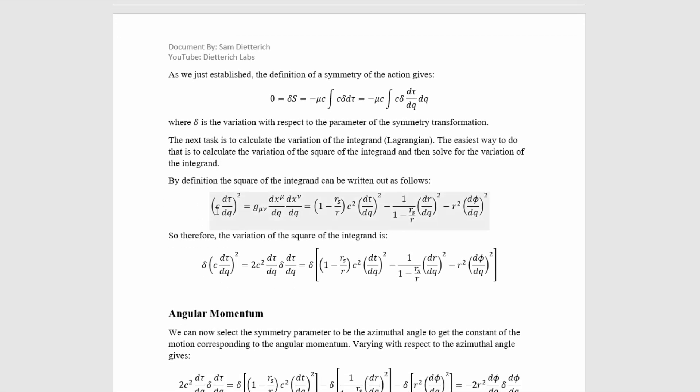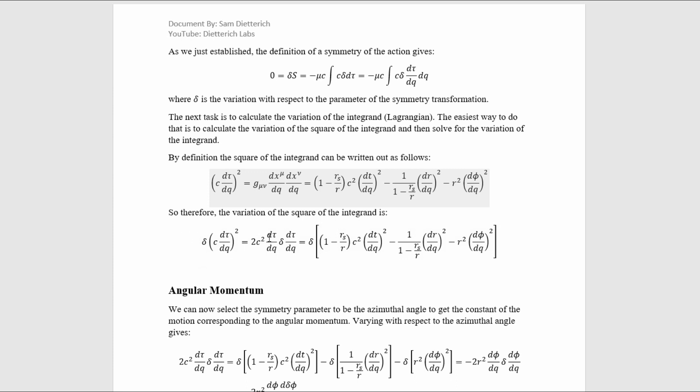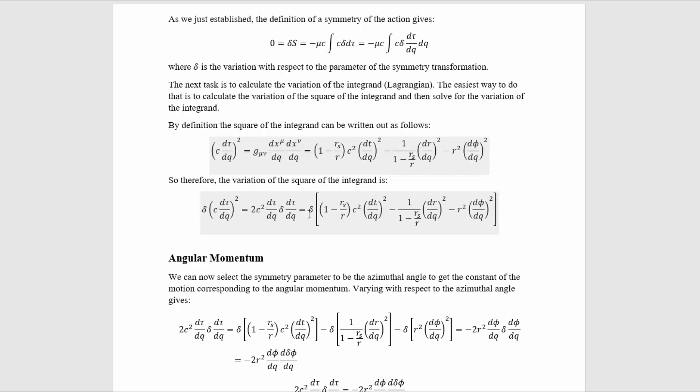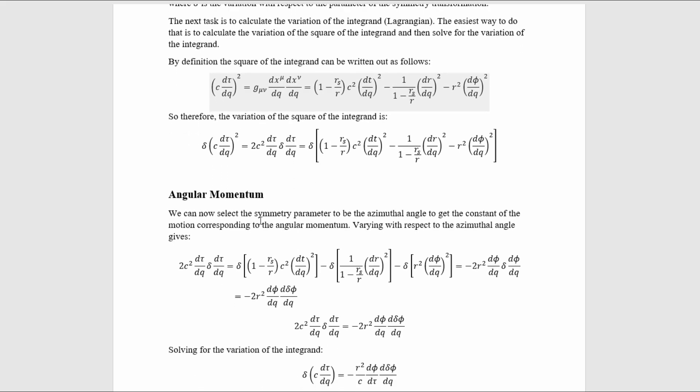The square of the integrand is this, which can be rewritten like that, and therefore plugging in the metric gives us this result for it. Then we can use the power rule to take the variation, which just tells us that this thing is equal to this. I did not distribute this in and mess with that yet. We'll do that when we consider a specific parameter. So now let's do that.